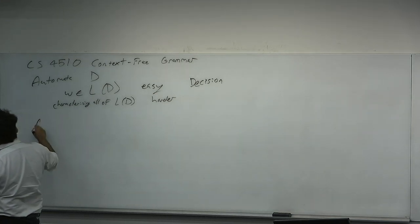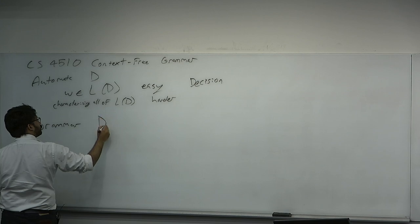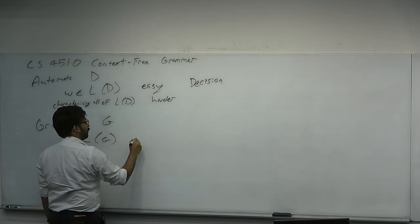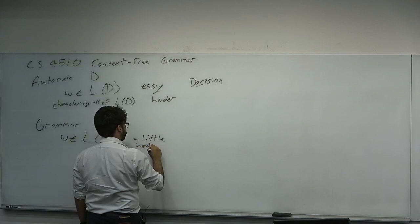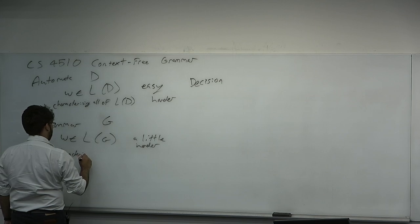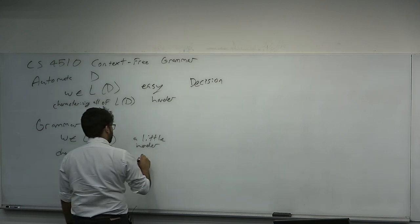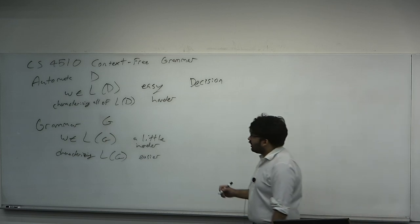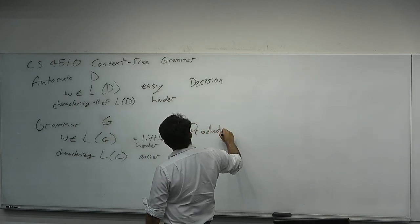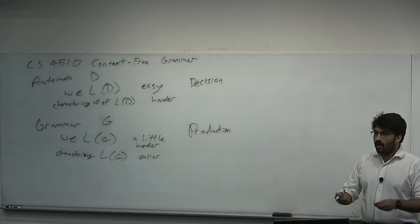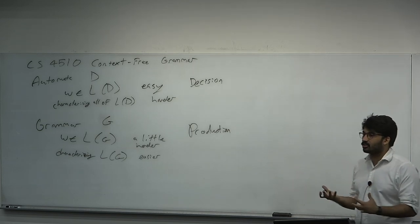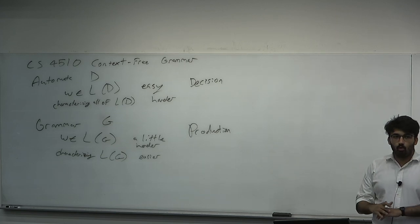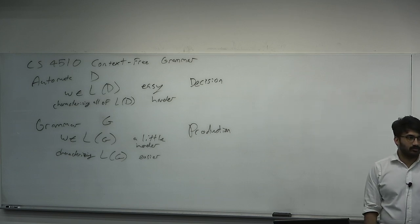A grammar, in contrast, is a different kind of object. There are many kinds of automata and many kinds of grammars. For a grammar G, determining if W is in L(G) is a little harder, but characterizing the whole language — determining what language is produced by the grammar — is easier. An automata is tasked with decision: given a question, it gives you an answer. A grammar, in contrast, is tasked with what's called production. Production means it doesn't take input; a grammar just outputs exactly and only the correct answers. In some sense, it's closer to a regular expression than to an actual automaton.